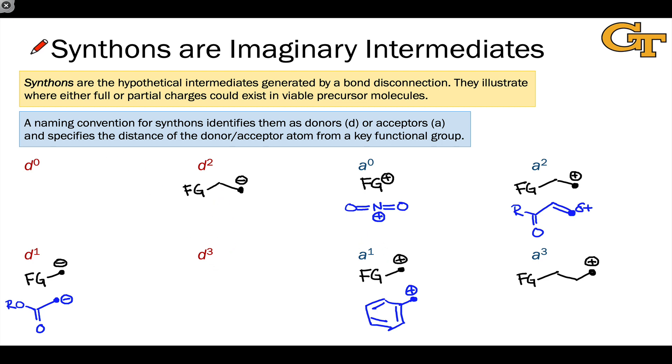Moving back to the donors, an analogous pattern applies. A D3 compound contains a functional group three atoms or three carbons away from the donor atom, which is negatively charged. And the D0 synthons contain negative charge directly on the functional group itself. A good example of a D0 synthon is something like a halide anion, X minus, Br minus, Cl minus. If we think of the bromine or the chlorine as a functional group in and of itself, those halide anions can be thought of as D0 synthons.